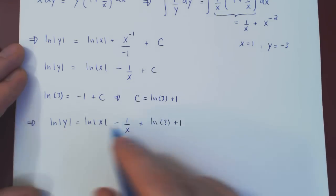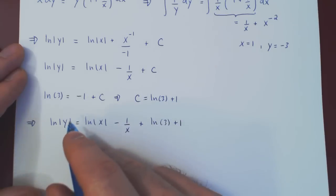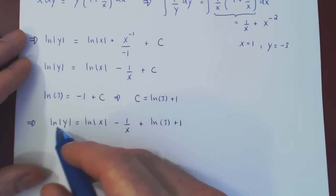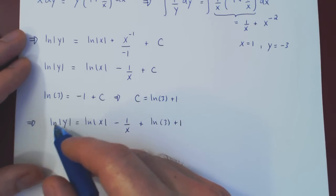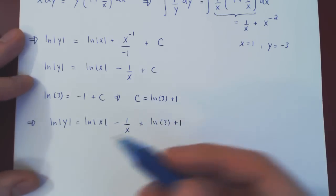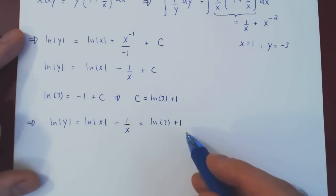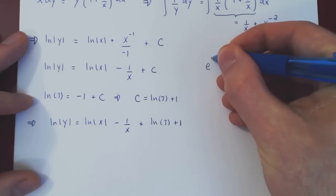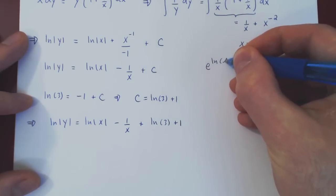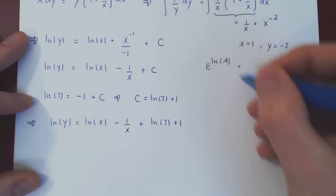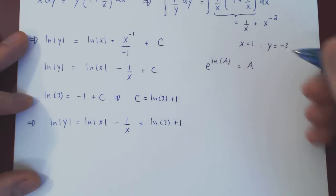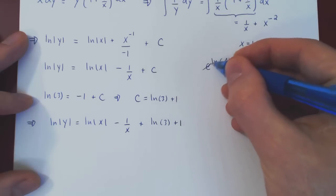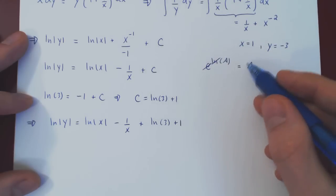To isolate y, we cancel the logarithm by exponentiating both sides with the natural exponential. Recall that e to the ln of a (for positive a) equals a, since e and ln are inverses. So we compute e raised to the entire right-hand side.